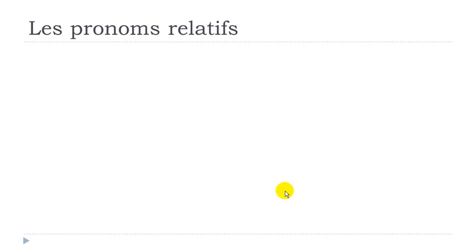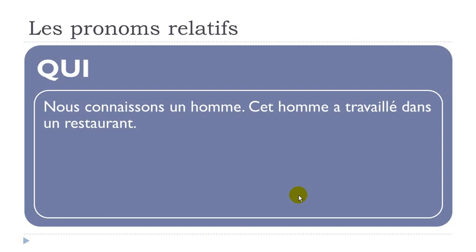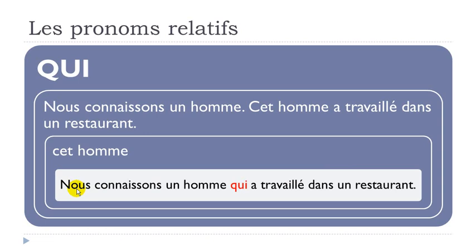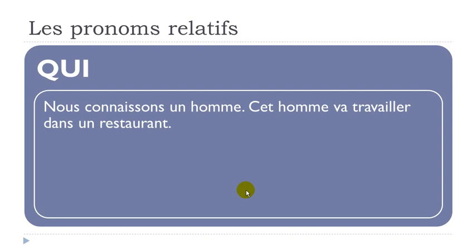Same structure at passé composé: NOUS CONNAISSONS UN HOMME / CET HOMME A TRAVAILLÉ DANS UN RESTAURANT — combined: NOUS CONNAISSONS UN HOMME QUI A TRAVAILLÉ DANS UN RESTAURANT. Even with the composed verb, QUI goes before it. At the near future: NOUS CONNAISSONS UN HOMME / CET HOMME VA TRAVAILLER DANS UN RESTAURANT — combined: NOUS CONNAISSONS UN HOMME QUI VA TRAVAILLER DANS UN RESTAURANT — QUI just before the verbs.